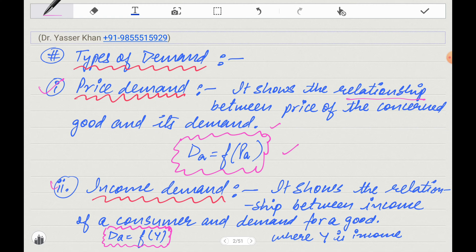Then, income demand. In the previous point it was price and demand. Income demand shows the relationship between income of a consumer and the demand for a product. This equation can also be written as demand for A is a function of income, meaning the demand depends on the income.